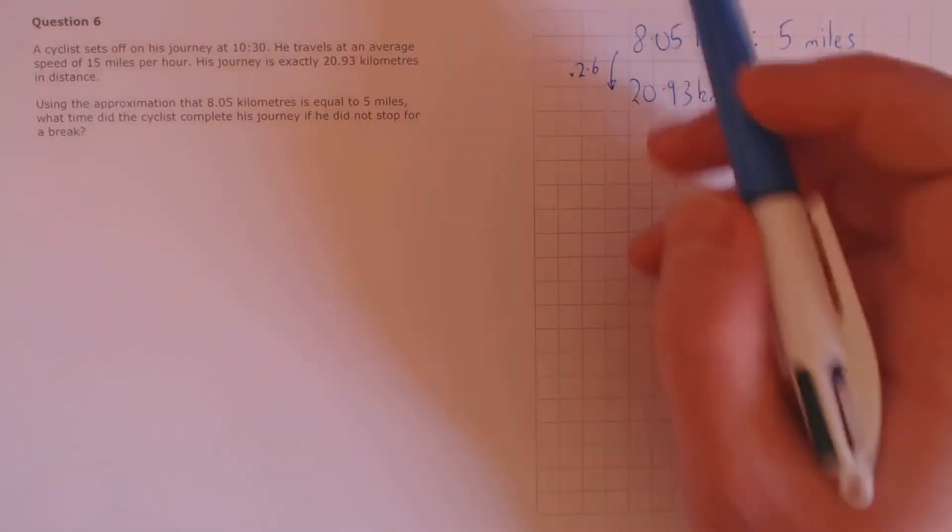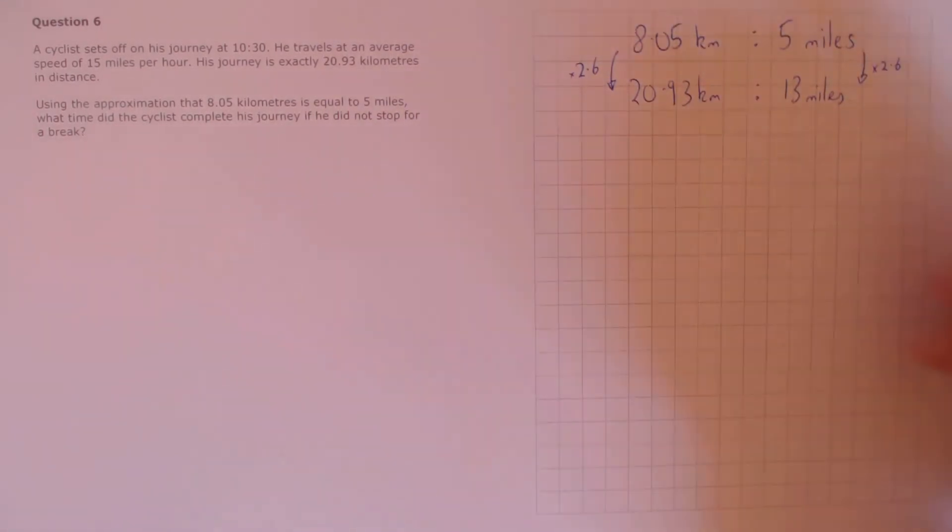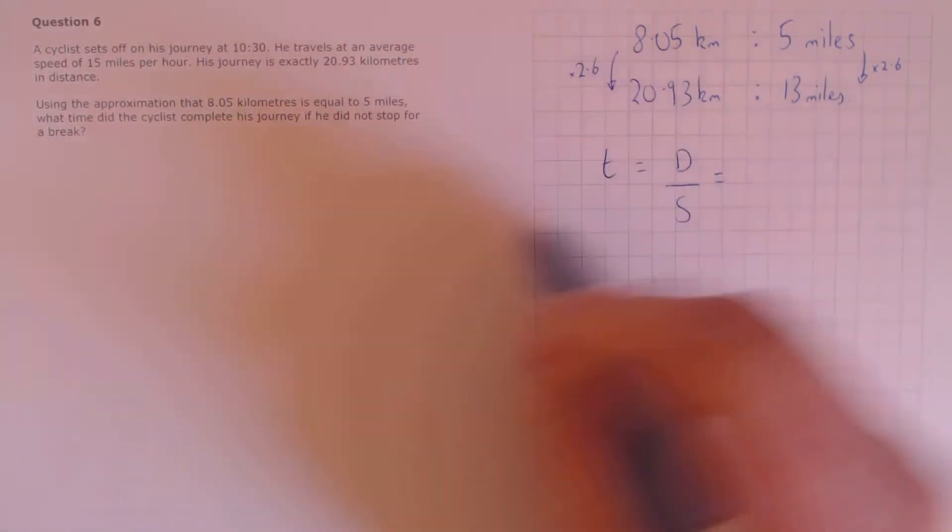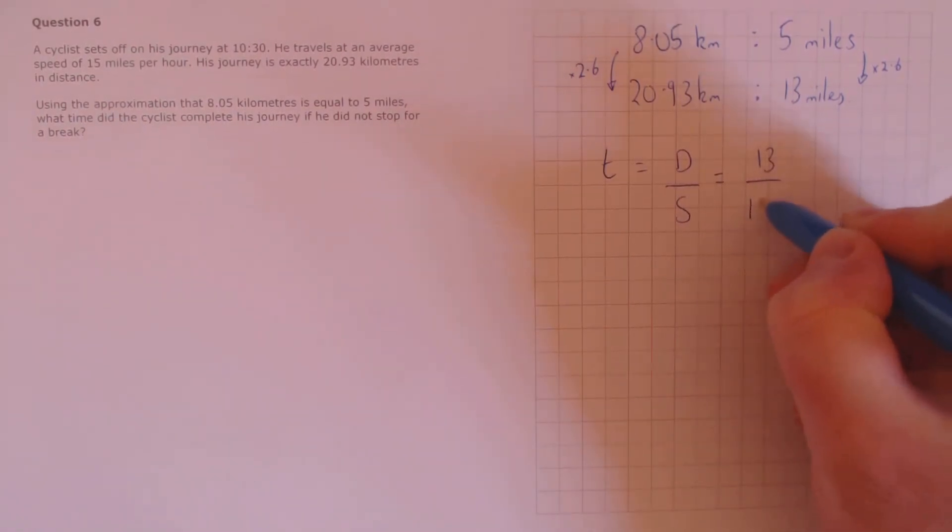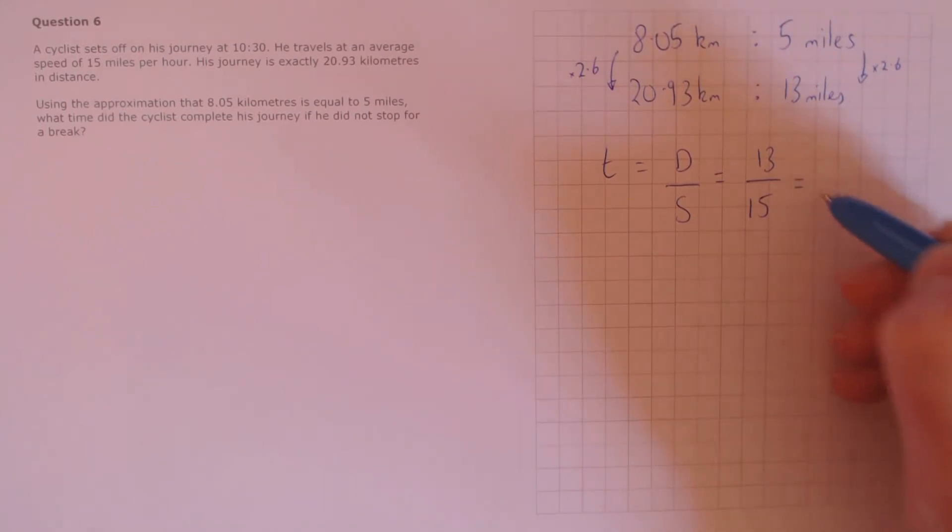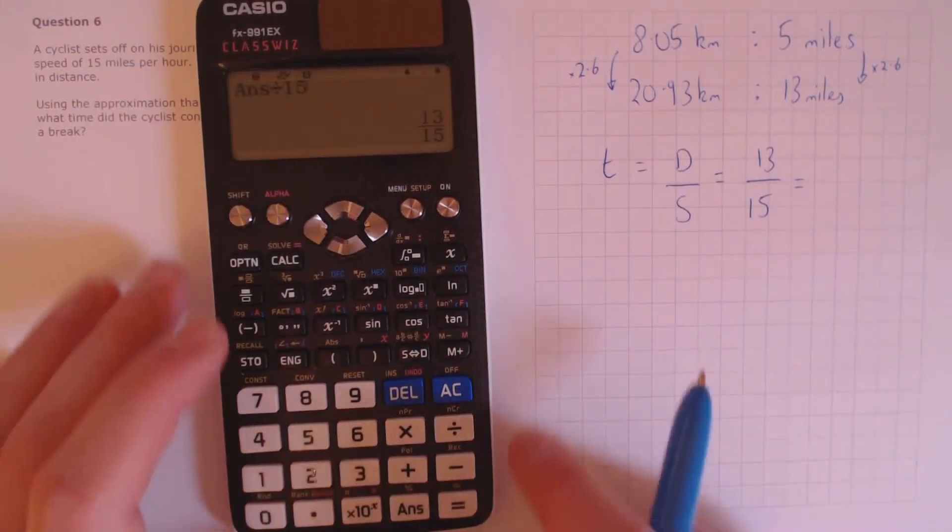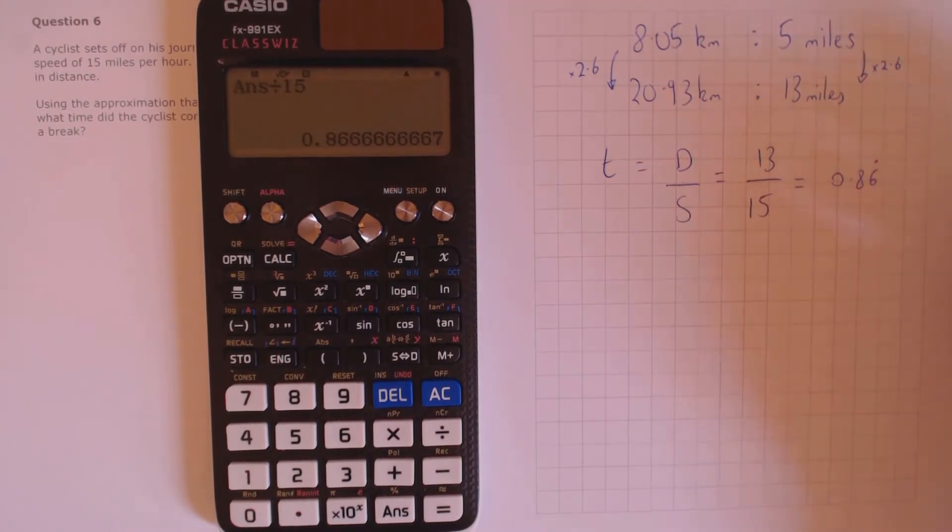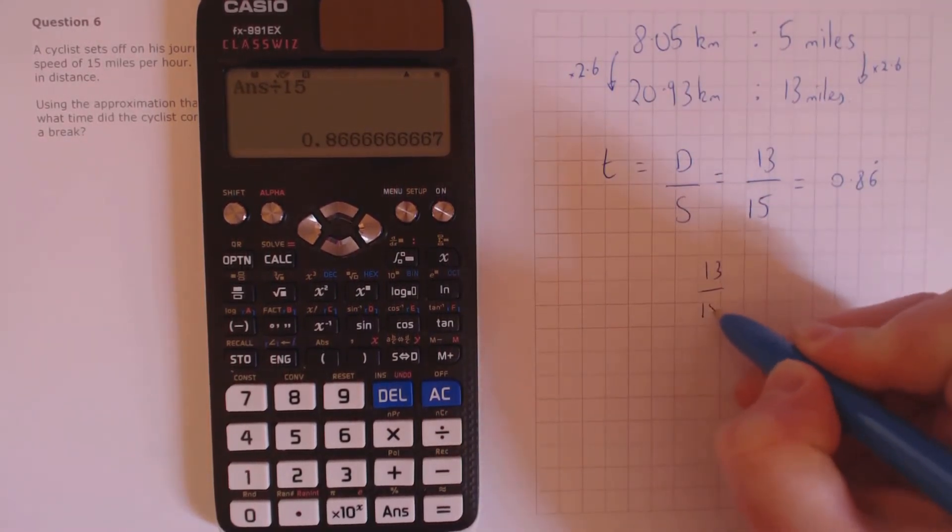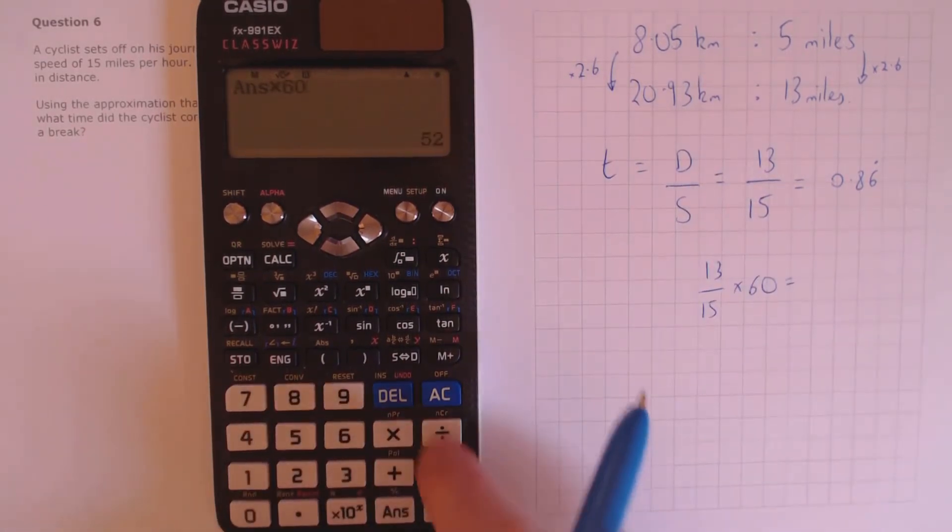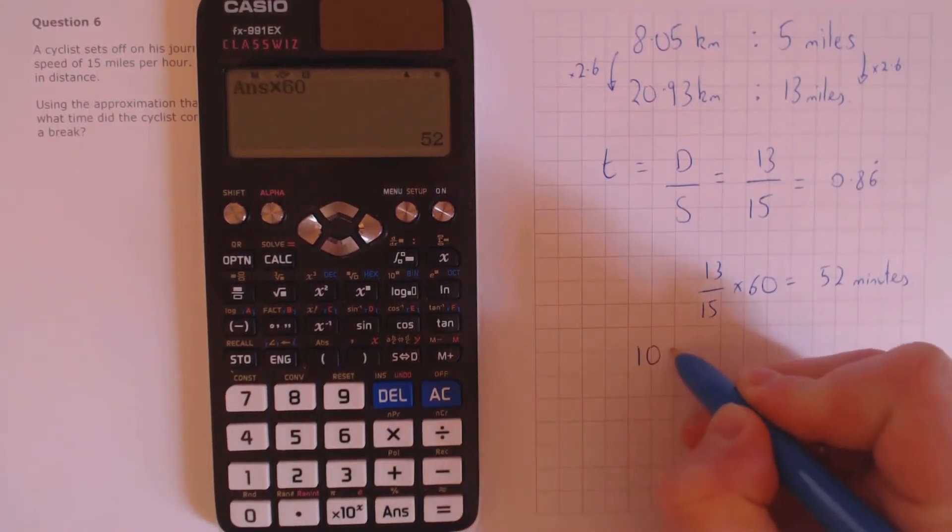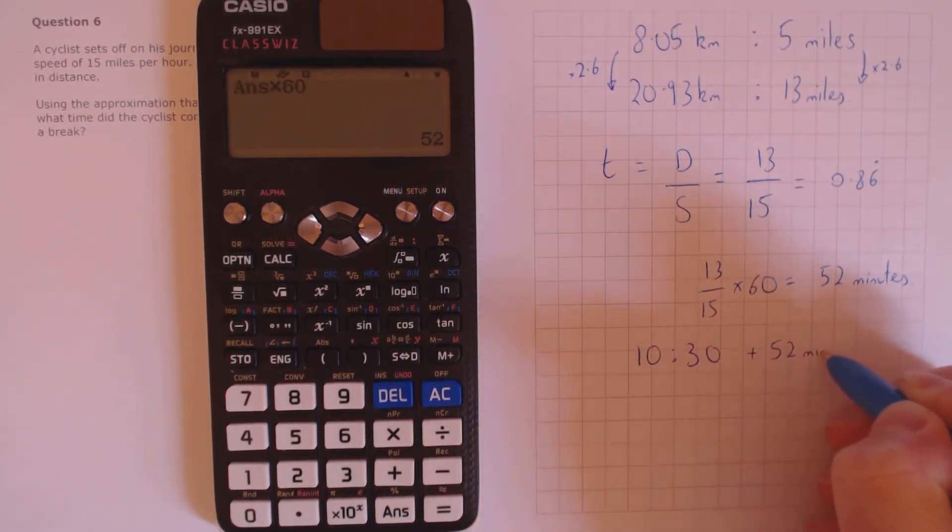Next we need to use our speed distance time to calculate how long it's taken. We know that time is distance over speed, so we have 13 miles divided by 15 miles per hour. That gives us approximately 0.86 recurring. However at the moment this is a fraction of an hour, so what we need to do is multiply 13 over 15 by 60 to get the time in minutes, which is 52 minutes. Our final step: he set off at 10:30, so we need to add 52 minutes, which means he completes his journey at 11:22.